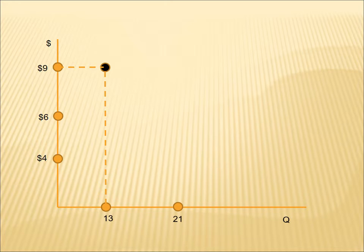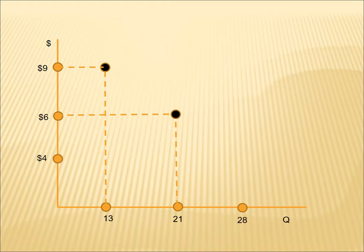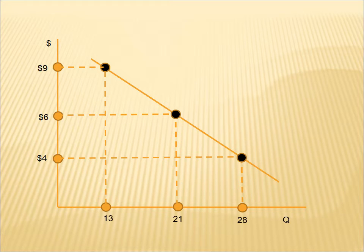Going further, if at $6 we see that people purchase 21 units per day, we plot that point — $6, 21 units — a second point in our two-dimensional space. Finally, at $4, purchases increase to 28 units, a third point in space. What we've done is show how behavior changes when prices change. As prices fall, the quantity purchased — also known as the quantity demanded — increases. By plotting these points and connecting them together, we get a reflection of human behavior: how people change their behavior based on different prices. This is our demand curve.